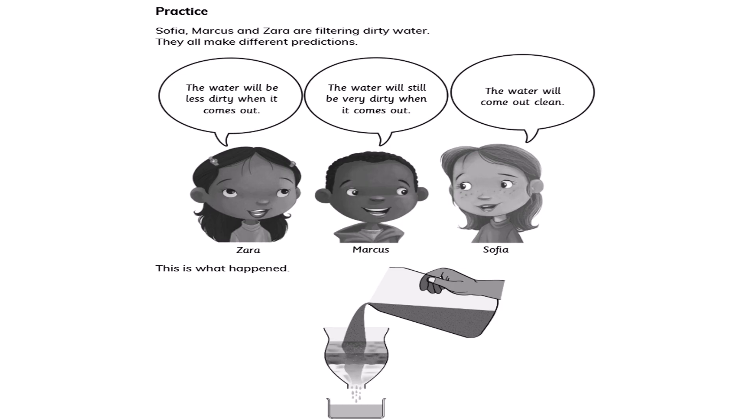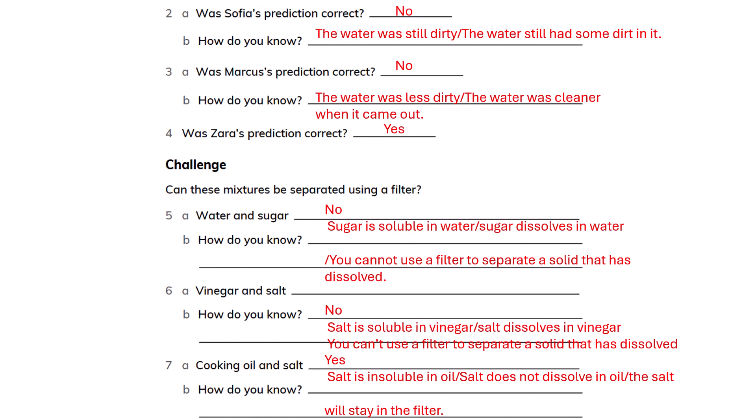Sophia, Markus, and Zara are filtering dirty water and make different predictions. Zara says the water will be less dirty when it comes out. Markus says the water will still be very dirty. Sophia says the water will come out clean. What happened: the water came out less dirty. Sophia's prediction was incorrect because the water was still dirty. Markus's prediction was incorrect because the water was cleaner when it came out. Zara's prediction was correct.